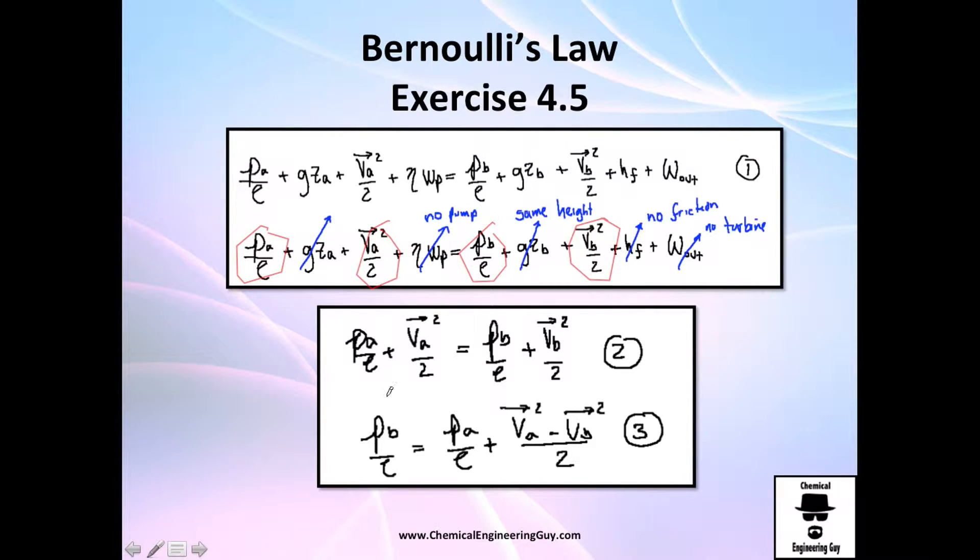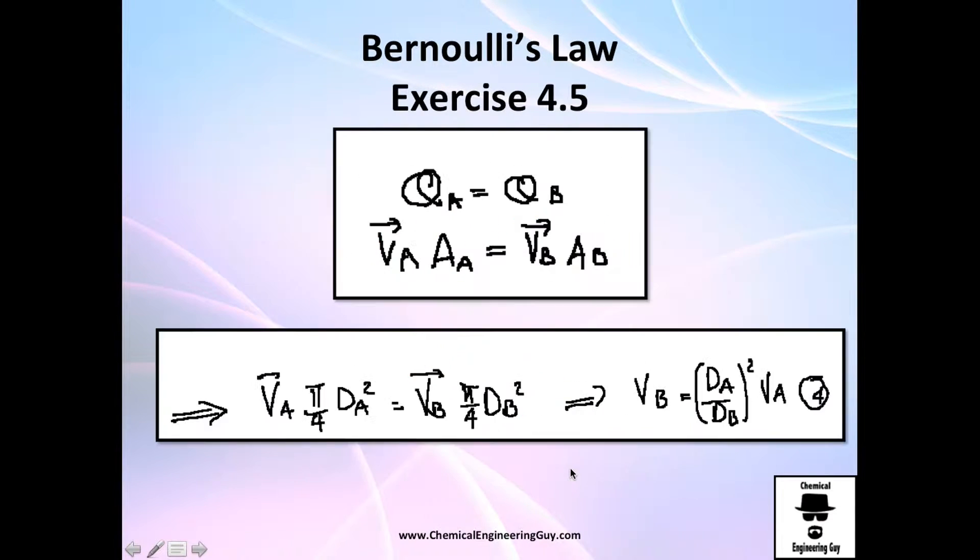Let me just move this to the right. This is equation number three. What do we have here? We have density, we have velocities—not everything, but we can actually calculate the second one. Let's do it. Recall that since this is continuous flow, what enters goes out here. Qa, the volumetric flow going in, equals the volumetric flow going out.